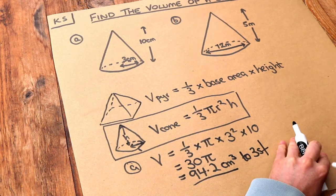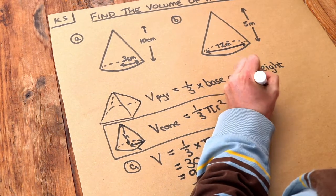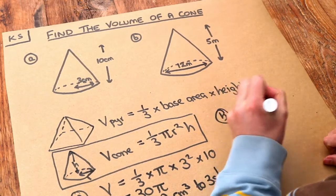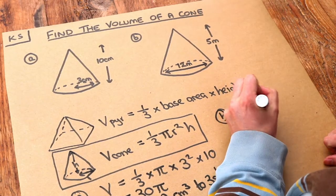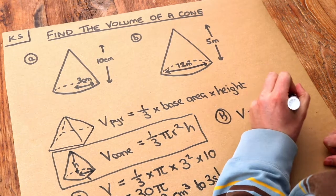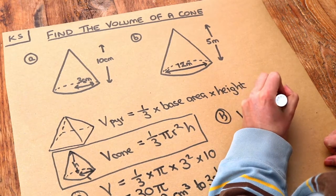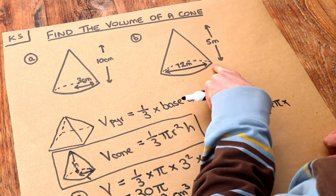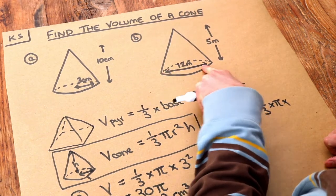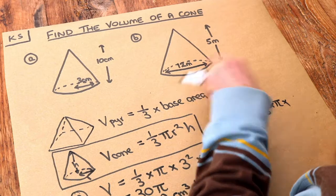What about the second one? We do the same again. The volume equals a third multiplied by π multiplied by the radius squared. If the diameter is 12, then the radius is half of that, which is 6. So 6² multiplied by the height, which is 5, and if we